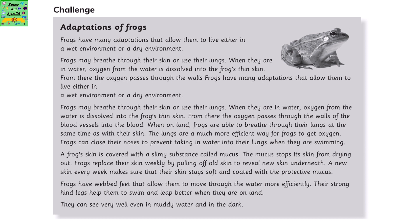Frogs have many adaptations that allow them to live either in a wet environment or a dry environment. When they are in water, oxygen from the water is dissolved into the frog's thin skin, and from there the oxygen passes through the walls of the blood vessels into the blood. When on land, frogs are able to breathe through their lungs at the same time as through their skin. The lungs are a much more efficient way for frogs to get oxygen.